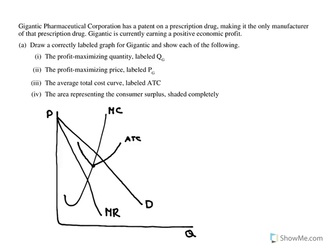We also need to show consumer surplus. To do that, we're going to label our profit-maximizing quantity, which would be QG, and our profit-maximizing price, which is PG. Consumer surplus is the area below the price and below the demand curve, so I'll shade that in with red — it's this triangle right here. And that's letter A.